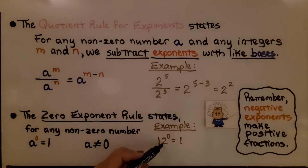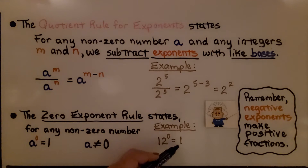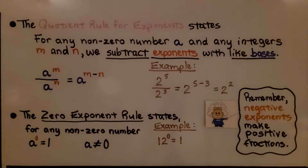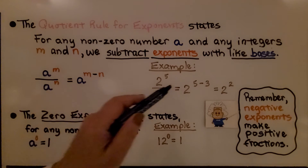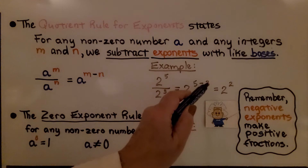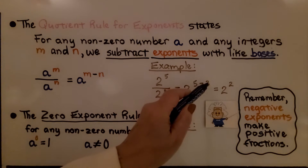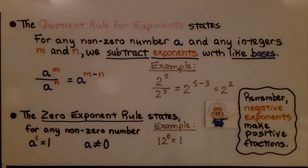So if you saw 12 to the zero power, that equals one. Remember: negative exponents make positive fractions. So if we were to subtract and get a negative exponent, that would make a positive fraction.